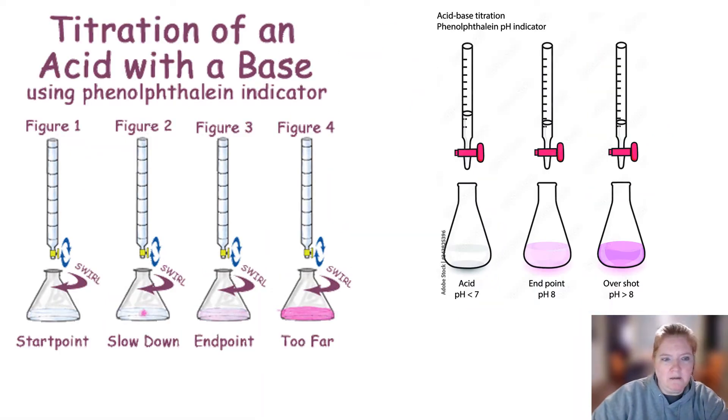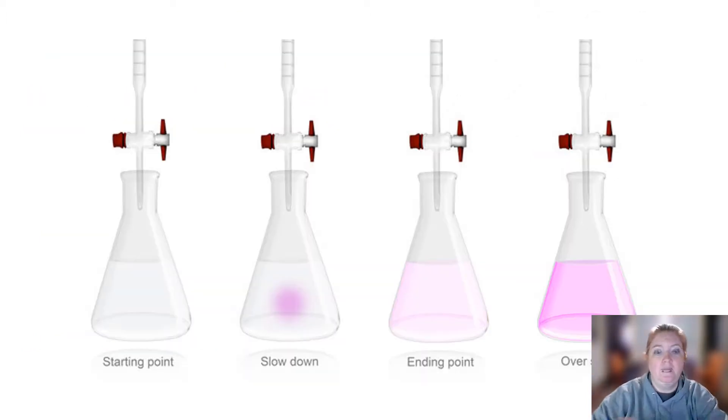So again, we start, we put drops in, swirl it, stir it. And then when we start seeing little bursts of indicator change that disappear when we swirl it, you should be slowing down. Our endpoint is when we see the very slightest color change. Real bright went too far.